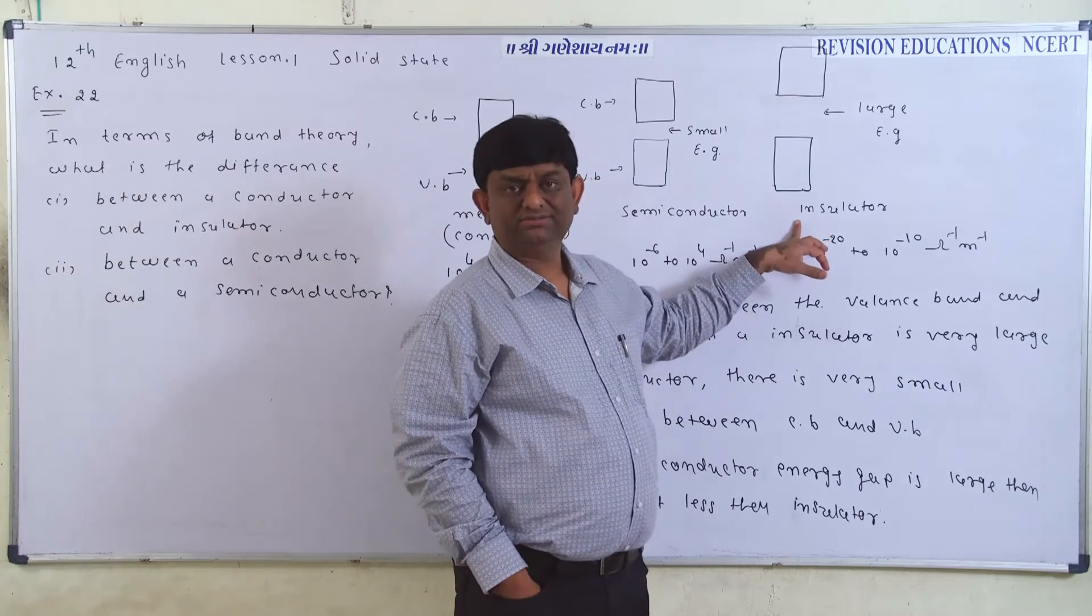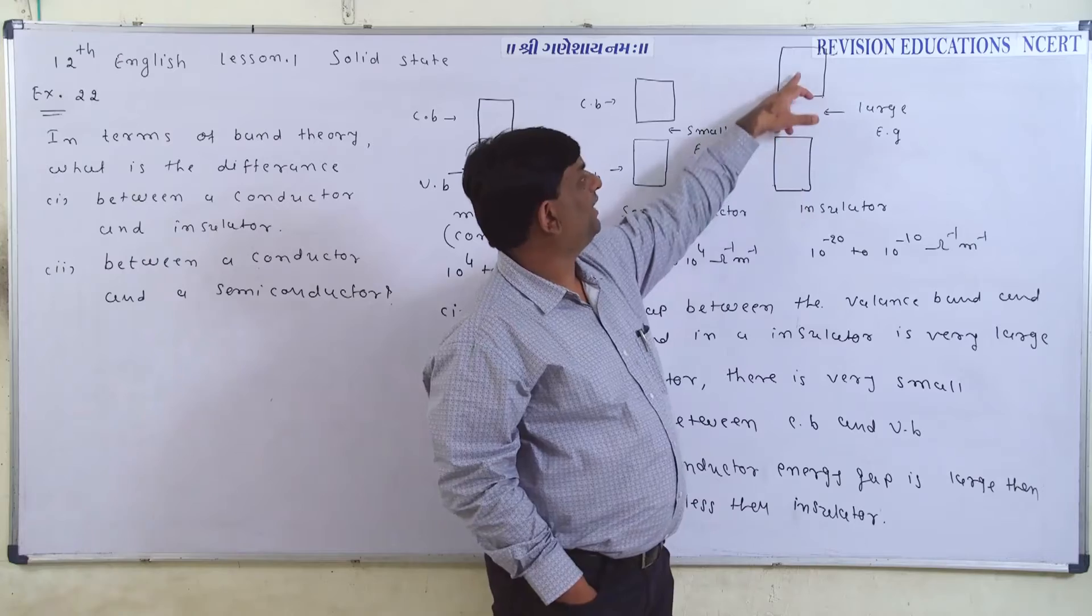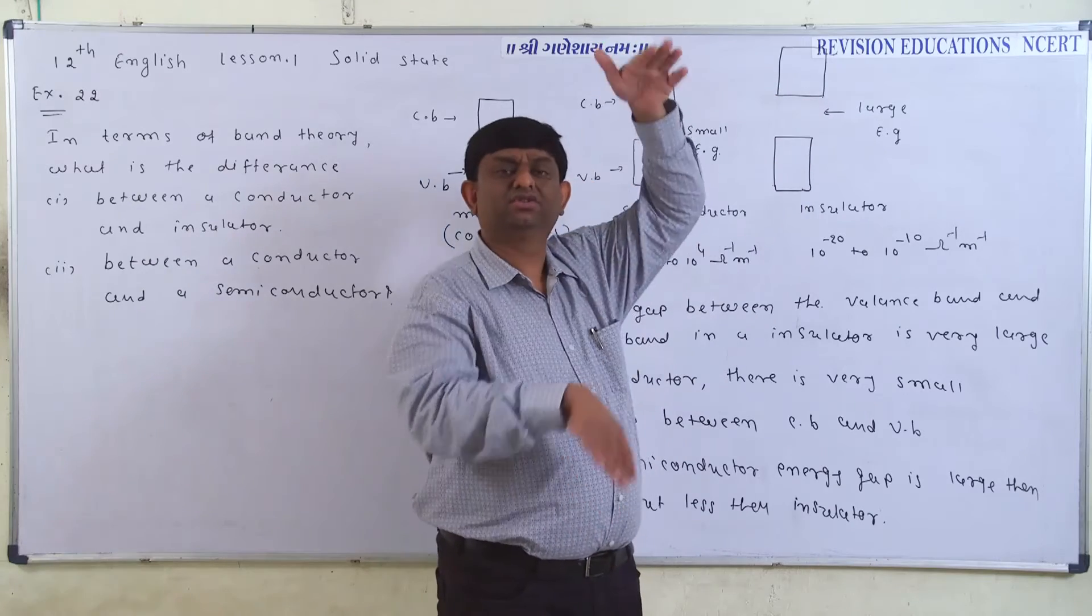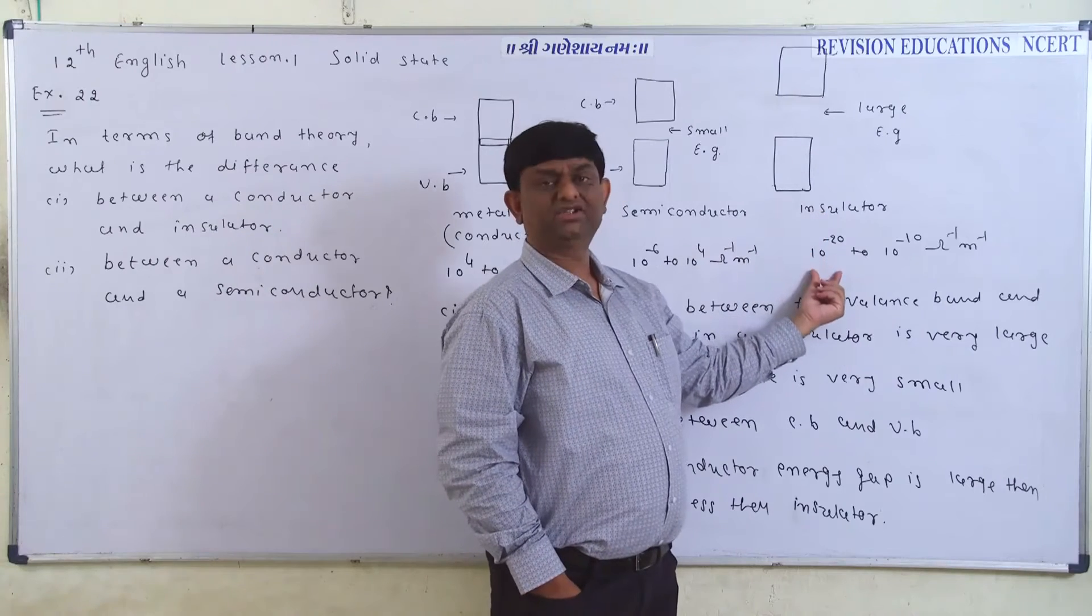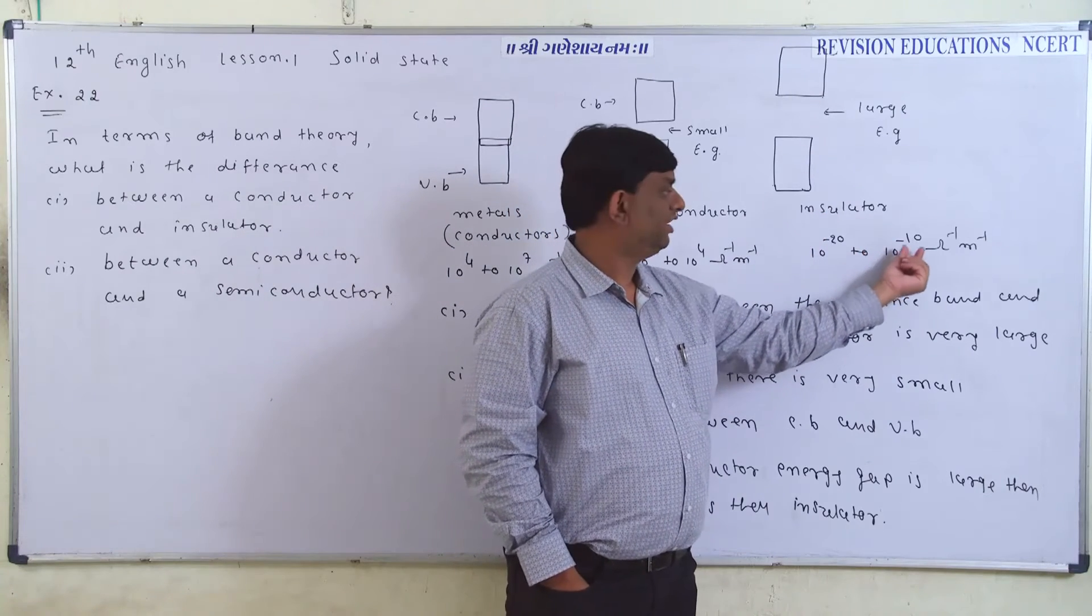And the insulator is low. So, what is the valence band and conduction band? What happens in the valence band? The energy gap is higher. The value is 10 to the minus 20 to 10 to the minus 20, ohm-inverse, meter-inverse.